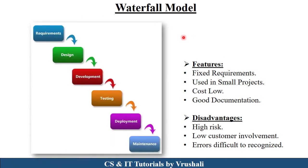In software engineering, the first traditional and basic model is the waterfall model. The concept of waterfall model is to collect requirement from the customer, design the product as per the requirement, then develop the product using a particular programming language, test the complete product, and after that deploy it to the customer. If the customer has any maintenance issue, solve it. In waterfall model, there is a fixed requirement from the customer. That's why it is used in small projects, the cost is low, and there is good documentation. But waterfall model works only in forward direction, so it is a high risk project. If the customer wants any changes, this kind of facility is not there.